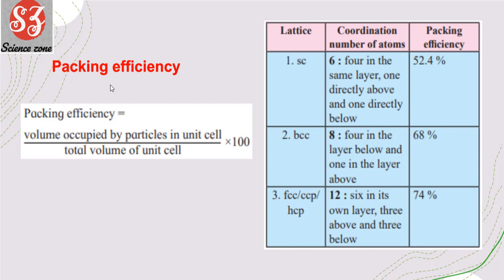Packing efficiency = (volume occupied by particles in unit cell / total volume of unit cell) × 100. Simple cubic has 52.4%, body-centered cubic has 68%, and FCC has 74%. For coordination numbers: simple cubic = 6, body-centered cubic = 8, and FCC = 12.